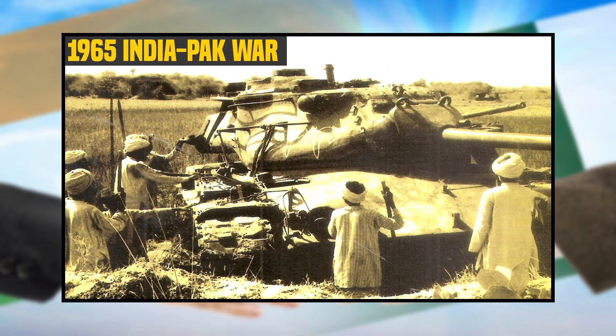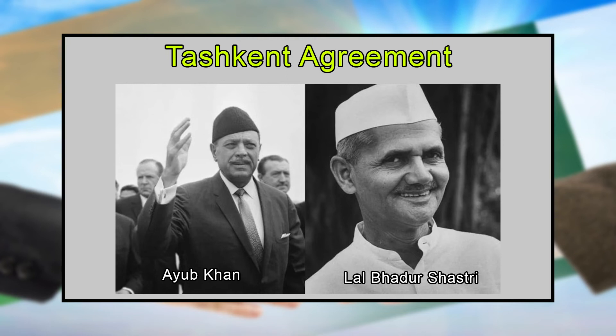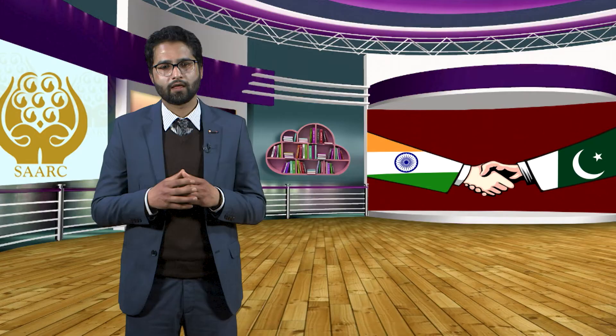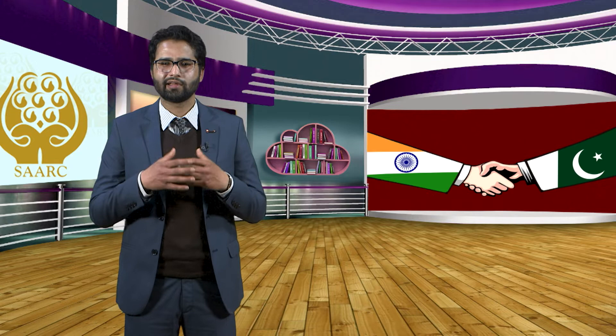The 1965 India-Pakistan 17-day war over Jammu and Kashmir was inconclusive. Under the Tashkent Agreement signed on January 10, 1966, between Indian Prime Minister Lal Bahadur Shastri and Pakistani President Ayub Khan, the status quo was restored — that is, captured territories were returned. In the wake of this war, representatives of important world powers visited South Asia to make conciliatory efforts and to get the Kashmir issue resolved.